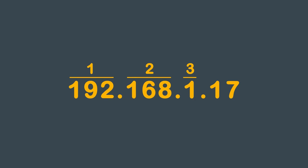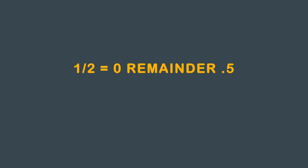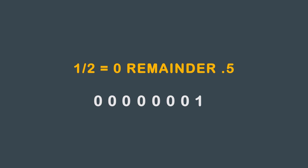Using the 1 is easy. Just take 1, divide that by 2, you get 0 with a remainder of 0.5. There's no reason to go any further as preceding zeros are irrelevant. You get 0 0 0 0 0 0 0 1, or just 1.